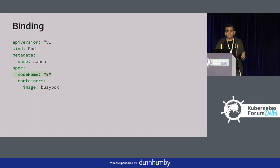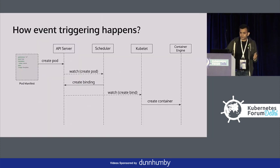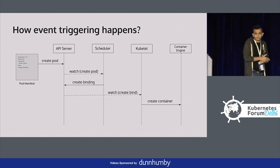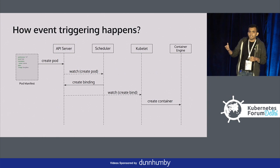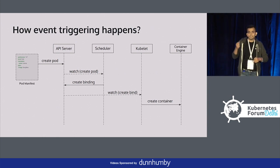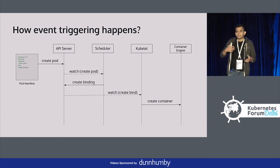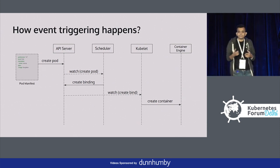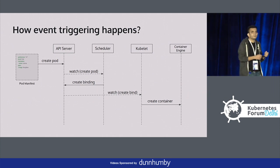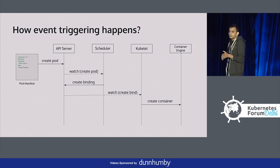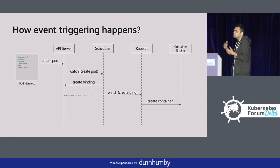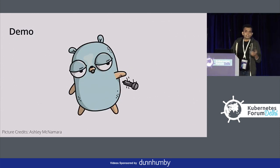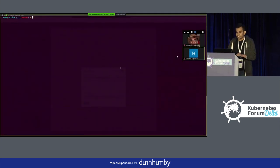Once the scheduler has decided the new pod goes to node eight, it has to assign it. For that, it creates something called a binding object. Looking at the flow diagram: once the pod is created, the scheduler watches the create pod event, figures out the target node, and creates a binding on the API server. The kubelet watches this create bind event and, as soon as it triggers, goes and creates the pod on the right node.